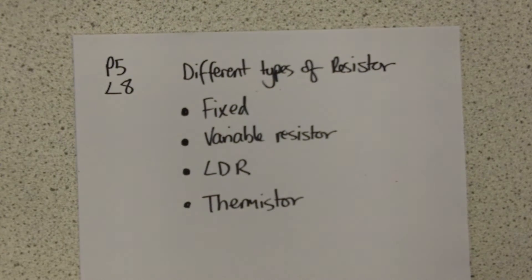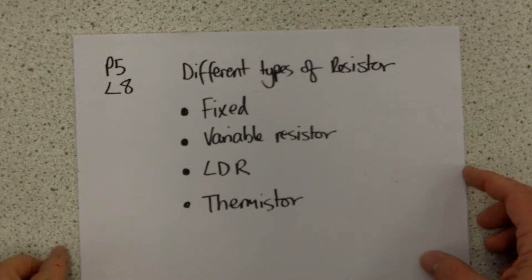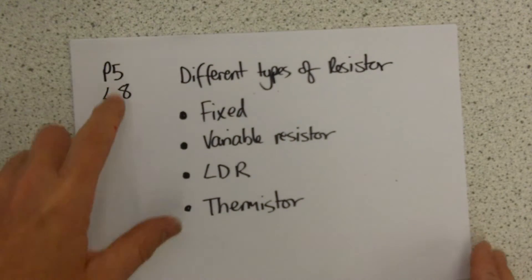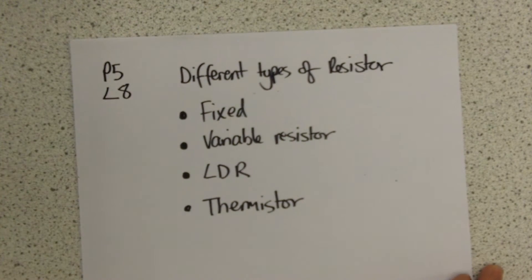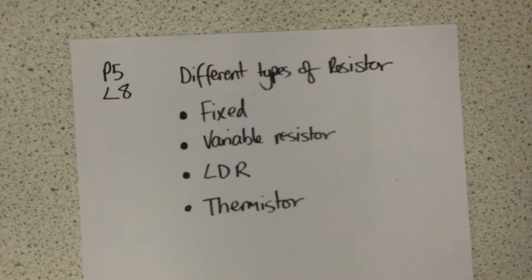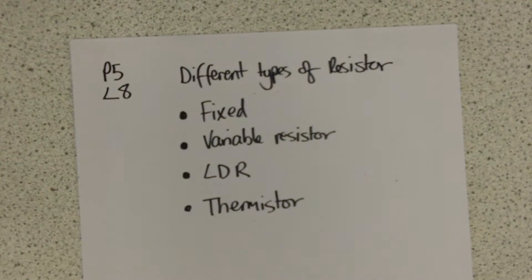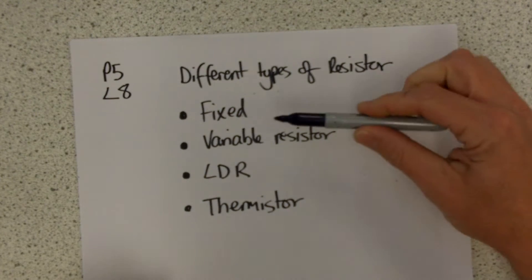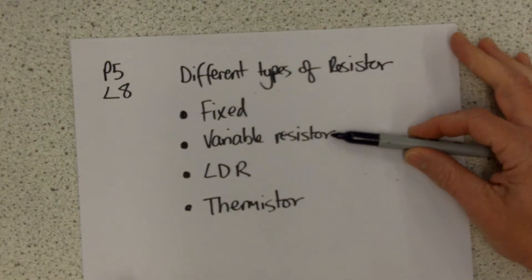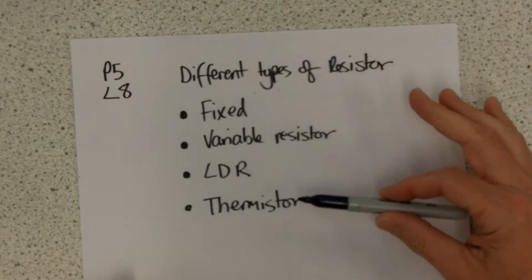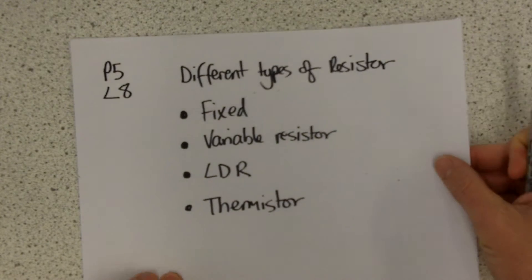Hi, welcome to this video, which is for people studying OCR 21st Century Science. We're looking at Unit P5, which is Electricity, and this is Lesson 8 in the series, and it's all about the different types of resistor. In the video we're going to look at fixed resistors, variable resistors, LDRs and thermistors.